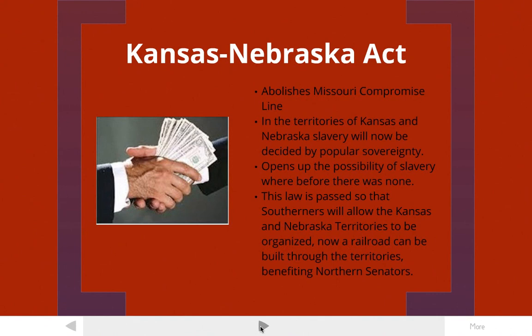Finally, in 1854, the issue popped up again with the Kansas and Nebraska Act. Kansas and Nebraska were supposed to be free states based on the Missouri Compromise. However, this act abolished the Missouri Compromise line that had previously been agreed to in 1820. The territories of Kansas and Nebraska would now be decided by popular sovereignty, meaning those territories could vote on whether they wanted slavery or not. This opened up the possibility of slavery where before it wasn't possible — it would have been against the law under the Missouri Compromise.